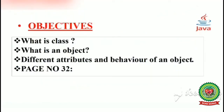As earlier we have discussed what is a class and what is an object. Today we are going to discuss different attributes and behavior of an object. Attribute means their characteristics, and behavior means functions of an object. The page number 32 we are going to discuss today.